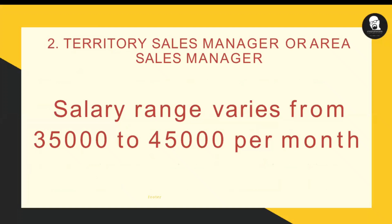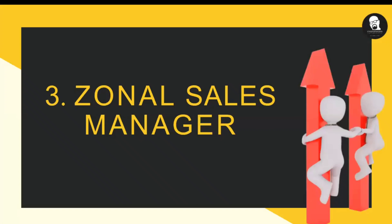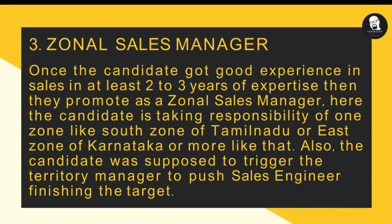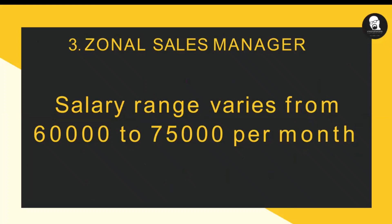The next level is zonal sales manager. Once the candidate gets good experience in sales — at least two to three years — they are promoted to zonal sales manager. Here the candidate takes responsibility for one zone, like south zone, west zone, or east zone. The whole zone is handed over to that particular zonal sales manager. Through the area sales managers and sales executives, he asks them to do jobs and report every day about selling, profit, loss, and other things, and updates the senior officials. The salary range is around 60,000 to 75,000 rupees per month.